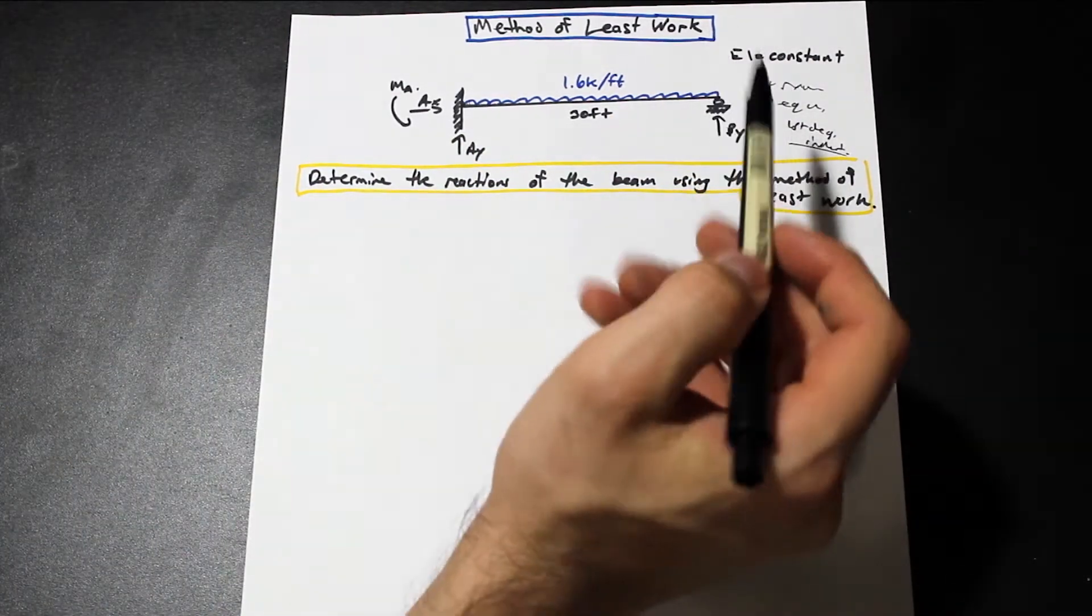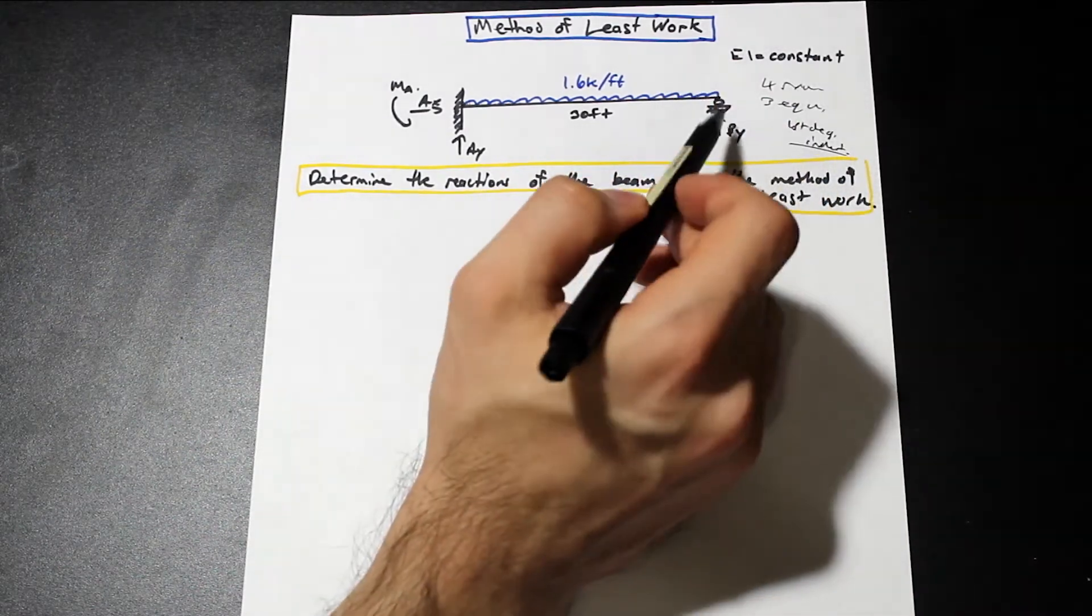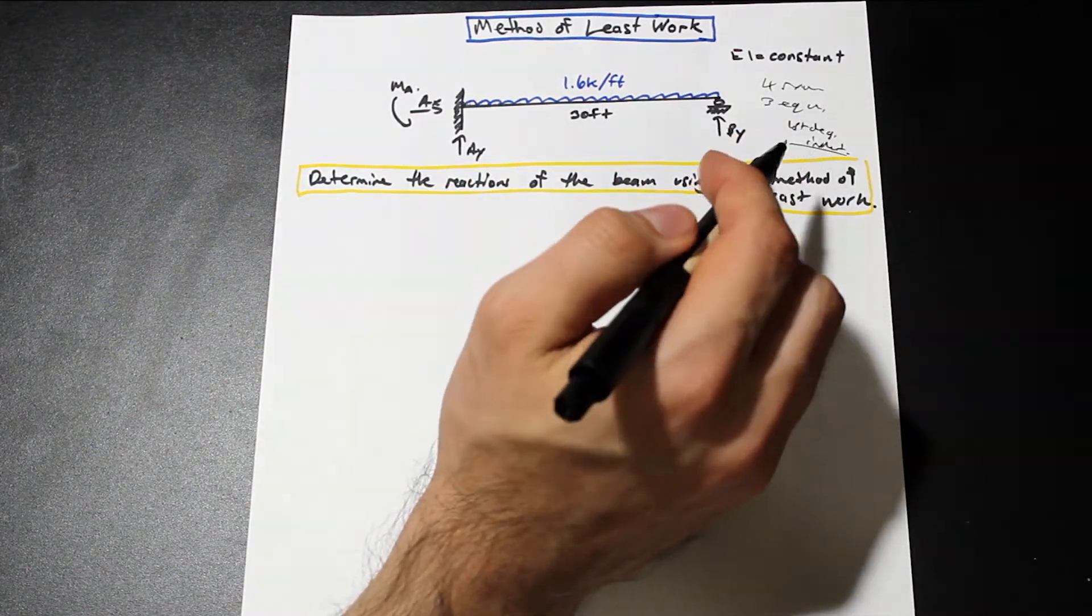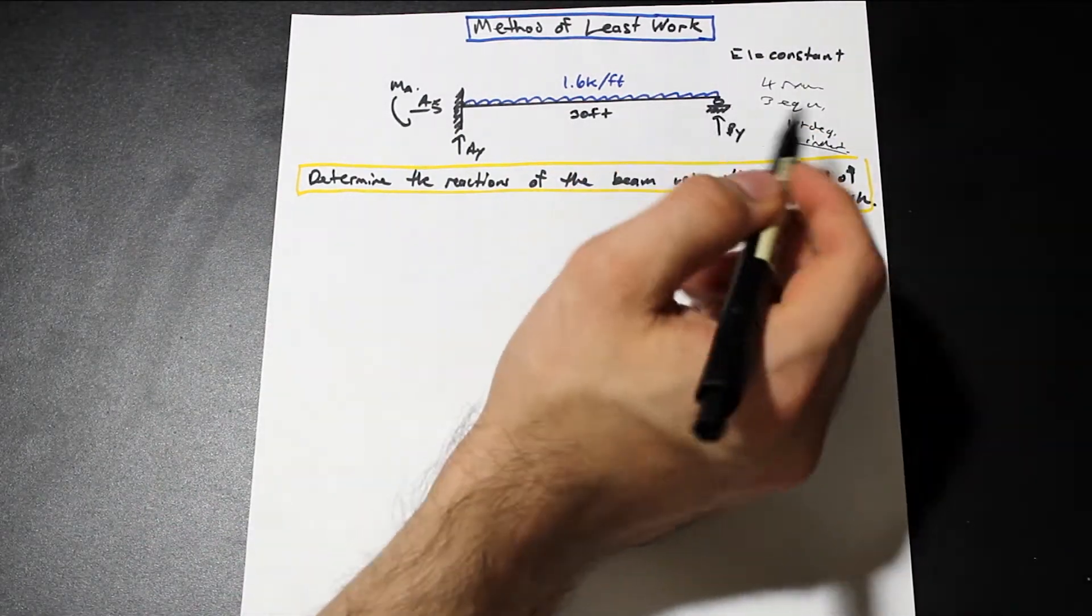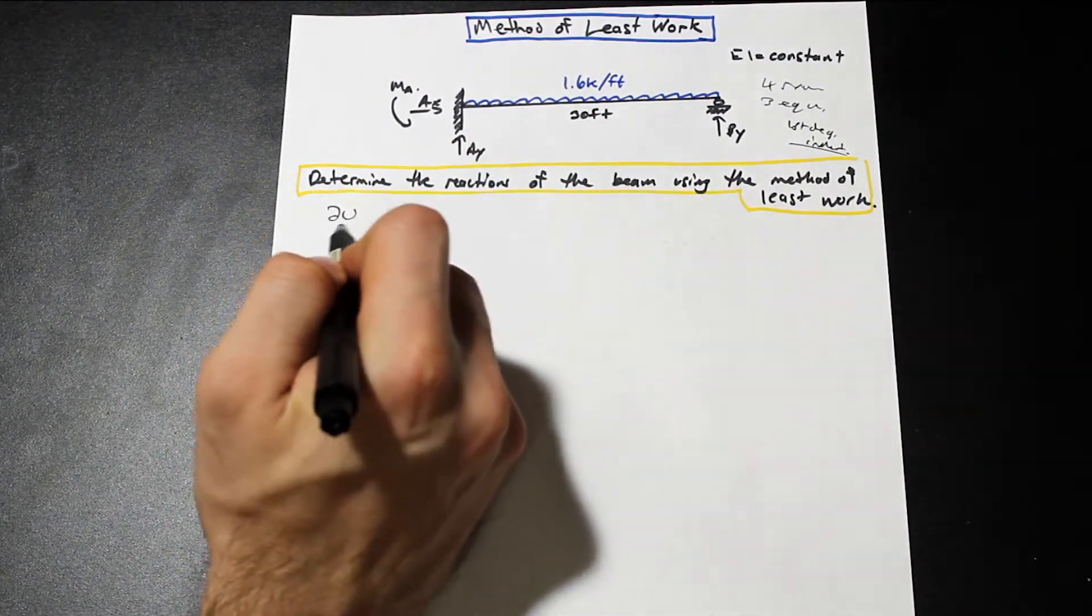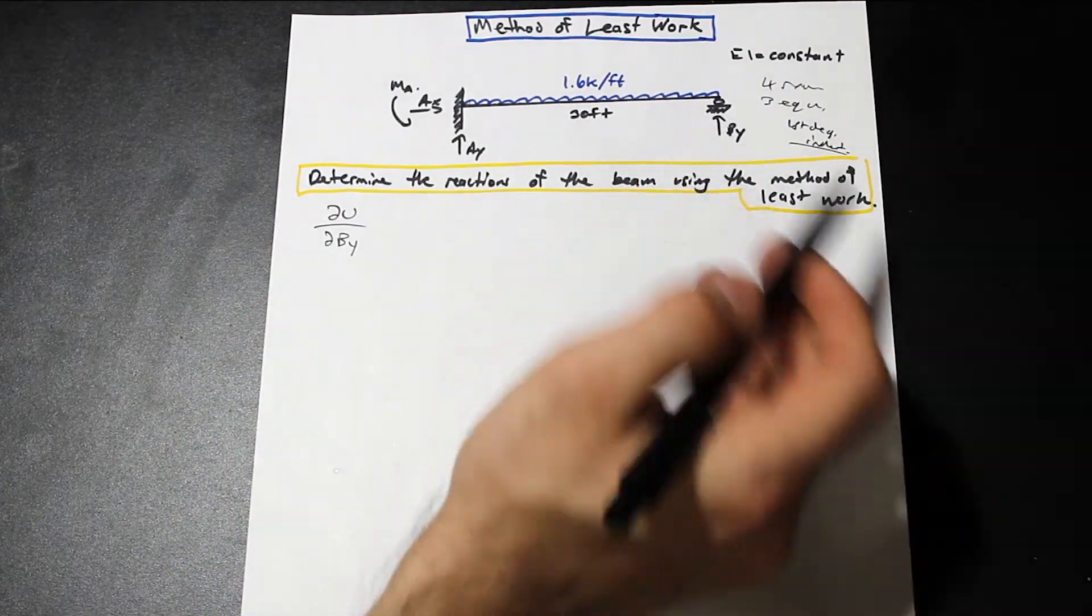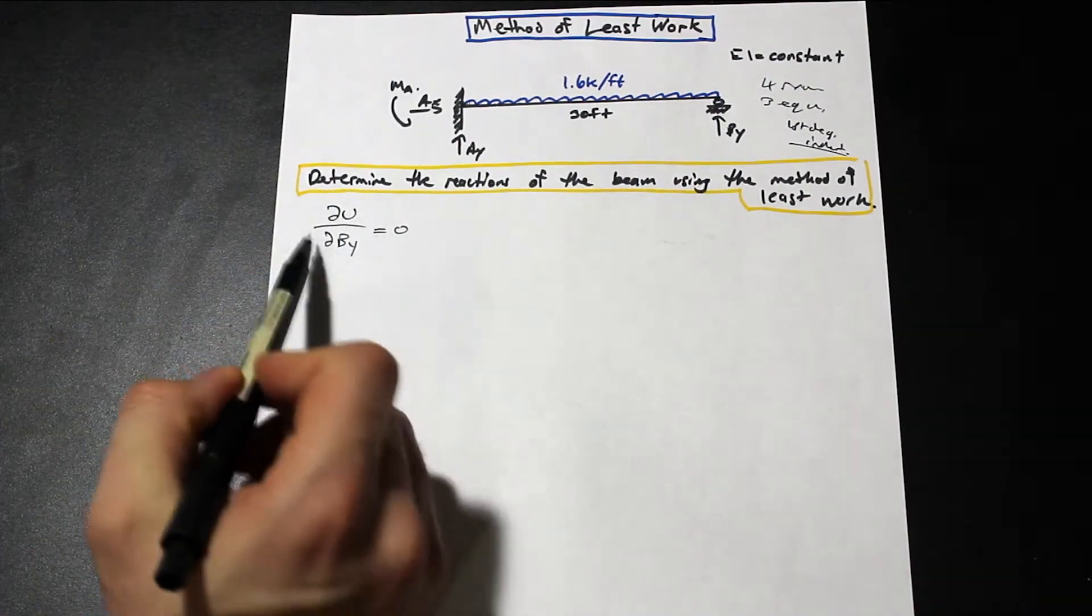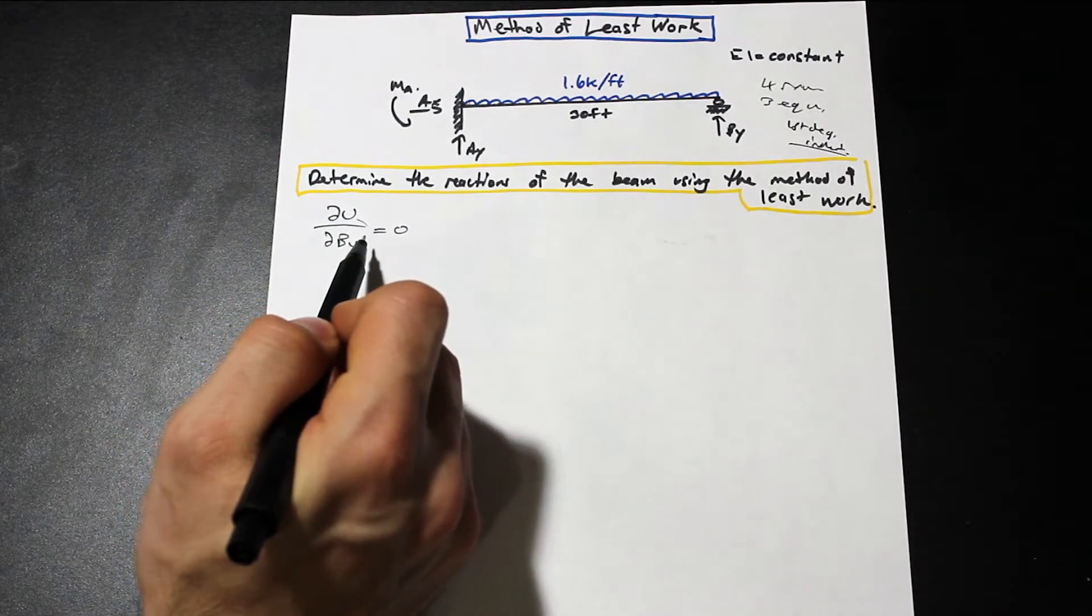So if you'll recall from, for example, force method, or pretty much any indeterminate method, we choose a redundant force. And what we can say is that since the strain energy corresponds to the deflection, at our redundant force that we replace the support with, the deflection will be zero. So we can say that the partial derivative with respect to the redundant force, in this case we're going to take our redundant as BY, is equal to zero.